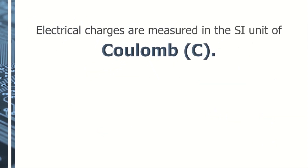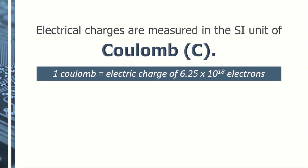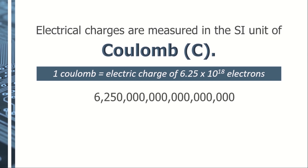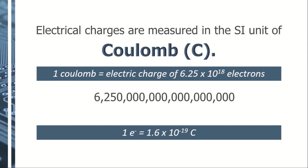Electric charges are measured in the SI unit of coulomb. One coulomb is equal to the electric charge of 6.25 times 10 to the 18th electrons. Therefore, one coulomb is equivalent to the electric charge of 6.25 × 10¹⁸ electrons. Electrons are used because electricity, as discussed earlier, most often results from their movement. One electron thus carries a charge of 1.6 times 10 to the negative 19th coulomb. This is probably a more useful value and the one that you have to remember.